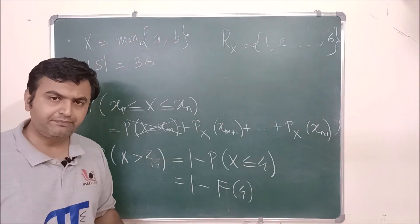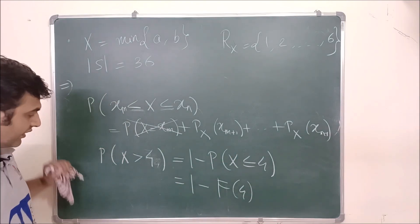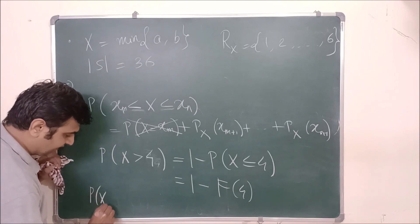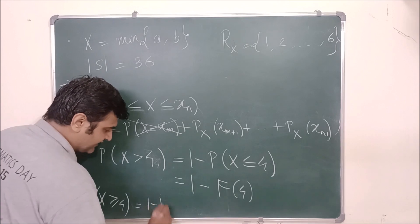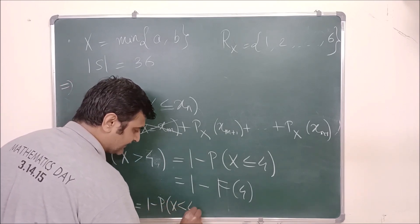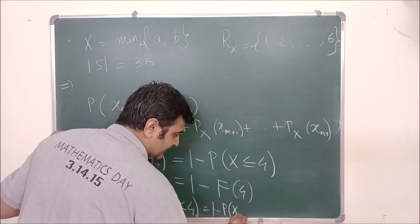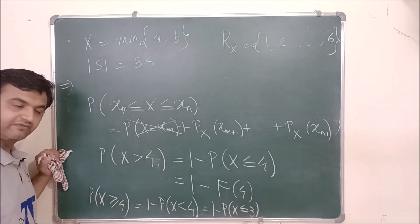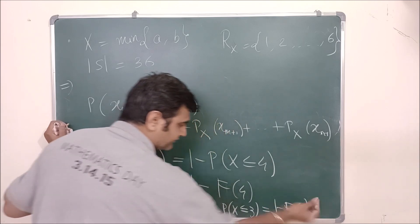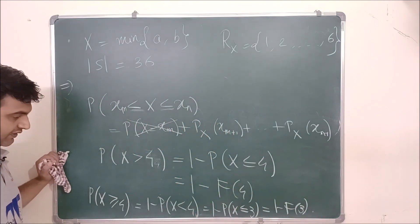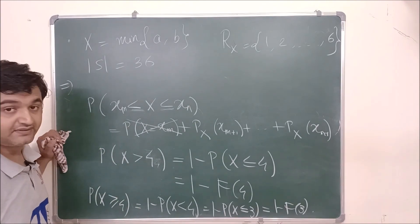Similarly, P(X ≥ 4) = 1 - P(X < 4) = 1 - P(X ≤ 3) = 1 - F(3). Always be careful in the discrete case about whether the inequality is strict or not, as it shifts which CDF value you use.